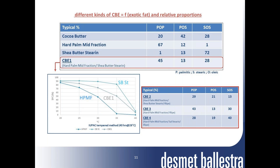Different kinds of cacao butter equivalents can be designed by varying the types of exotic fats and the relative proportions of the hard palm mid fraction. This gives different contents of POP, POS, and SOS and therefore different solid fat melting profiles. For example, CBA-1 is customized based on a blend of shea butter sterin and hard palm mid fraction, while illipe butter and salt fat sterin can also be used, as shown for CBA-2, CBA-3, and CBA-4.